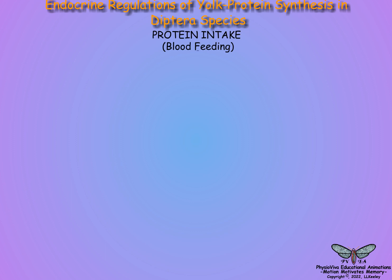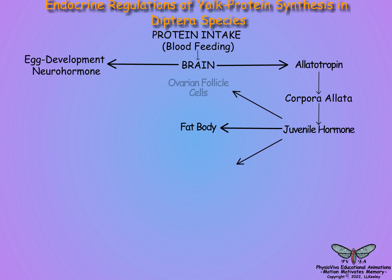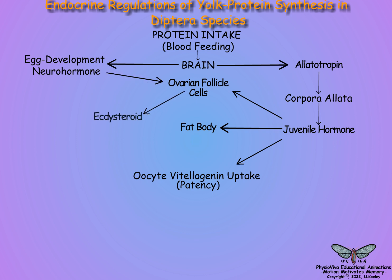Blood feeding by female mosquitoes releases a mid-gut factor that signals brain neurosecretory cells to secrete allotropin and an egg development neurohormone. The allotropin stimulates the corpora allata to secrete juvenile hormone, which enhances both the biosynthetic capacity of the fat body and results in ovarian patency, and also renders ovarian follicle cells competent to produce ecdysone in response to the egg development neurohormone.